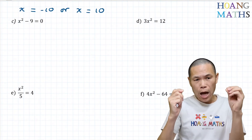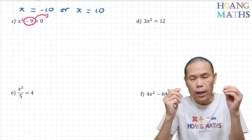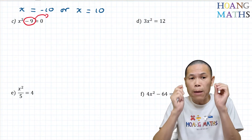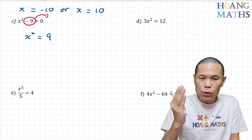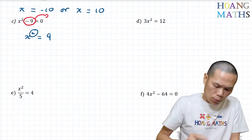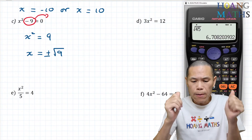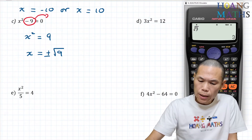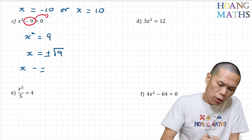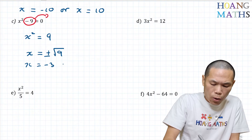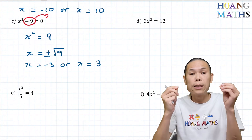Part c: x squared minus 9 is equal to zero. To solve this, I move the negative 9 to the other side first — negative 9 moves over and becomes positive 9. So x squared is equal to 9. Now the opposite of square is square root, so therefore x is equal to plus or minus square root of 9, which gives x equals negative 3 or x equals 3.